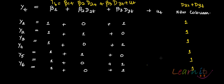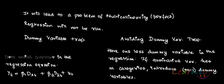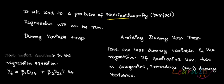When you add all of them, you get this column, and this column is exactly equal to the column of the constants. Because of this, it will lead to a problem of perfect multicollinearity, and you cannot run the regression. This is the problem of the dummy variable trap — you are trapped because when you have two categories, you have put dummies for both. Instead, you should have put only one category.